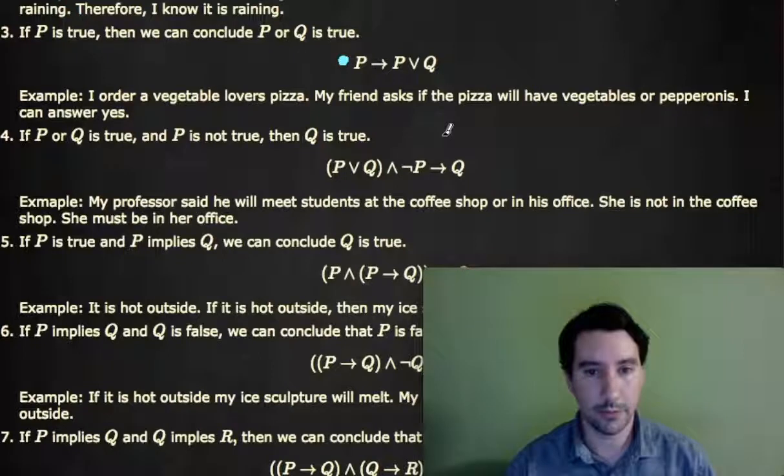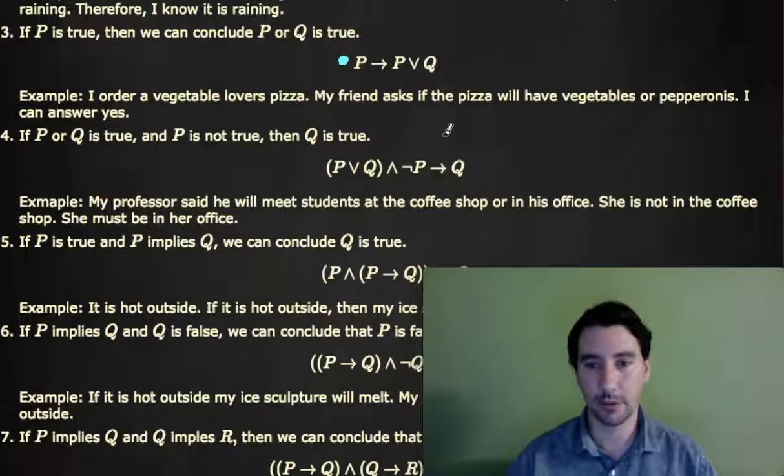Say I order a vegetable lover's pizza with all sorts of vegetables, and my friend asks, will the pizza have vegetables or pepperonis, then I can answer yes, because at least one of those statements is true, it's certainly going to have vegetables.